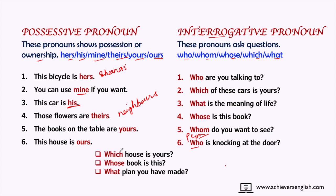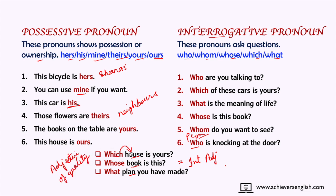An important thing to remember: if these words — which, whose, and what — are followed by a noun (like 'house,' 'book,' or 'plan'), they become interrogative adjectives, not pronouns. Words that modify a noun are adjectives. Another way to identify adjectives is that adjectives and nouns stand together — adjectives of quality can come anywhere, but all other adjectives come before the noun.